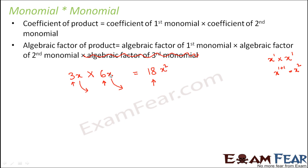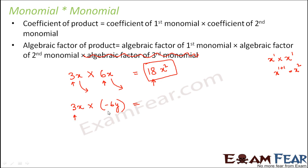So the product of 3x and 6x is 18x². Now let's take more examples. Suppose you have to multiply 3x with minus 6y — two different variables. The numeric coefficients: 3 into minus 6 gives minus 18. The algebraic factor: x into y gives xy. So the product is minus 18xy.